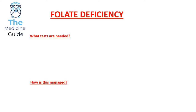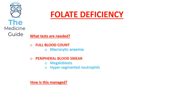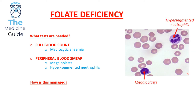In terms of investigations, we confirm macrocytic anaemia with a full blood count showing low haemoglobin and raised MCV. A peripheral blood smear showing megaloblasts confirms macrocytic megaloblastic anaemia. The peripheral blood smear may also contain hypersegmented neutrophils — defined as more than five lobes present within a neutrophil.